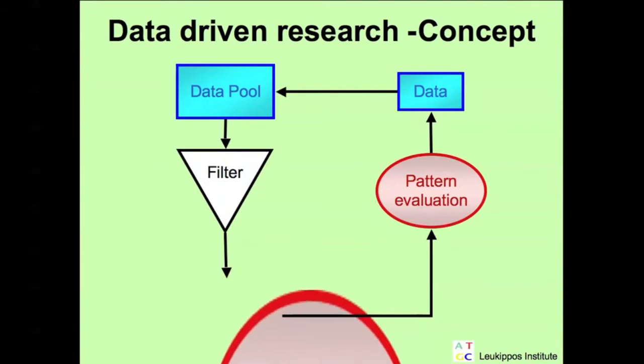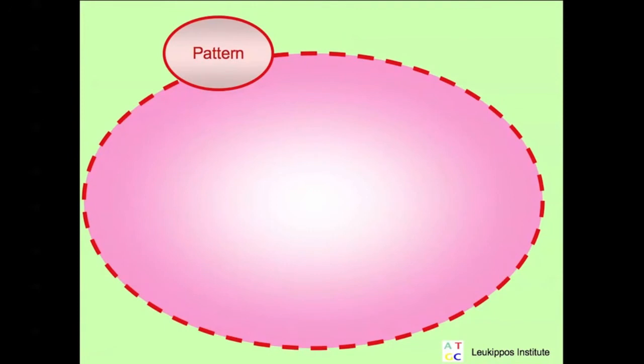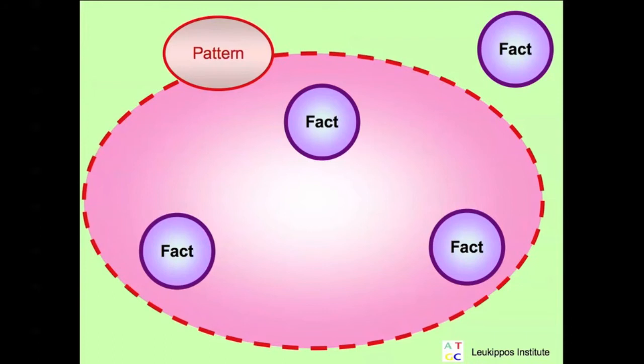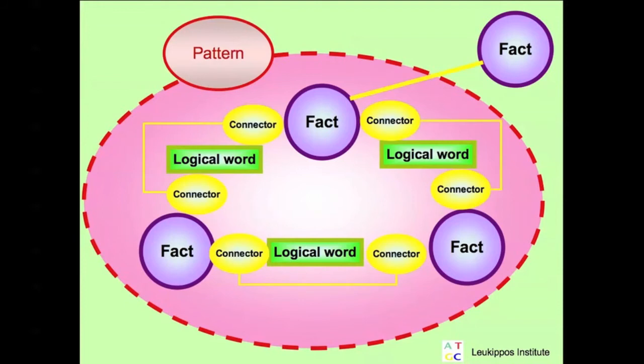The pattern is an open system. It contains facts. Logical words are bound via connectors specific to the facts. This gives a network of correlated facts.